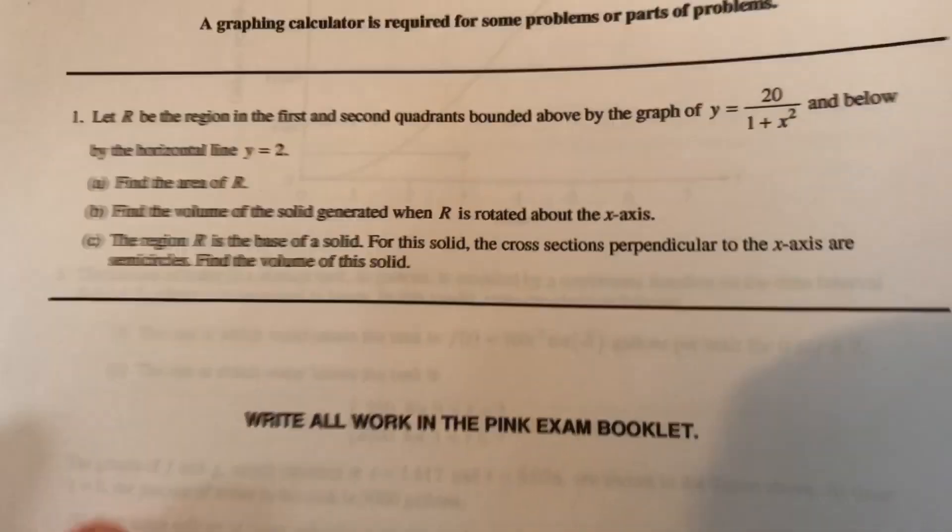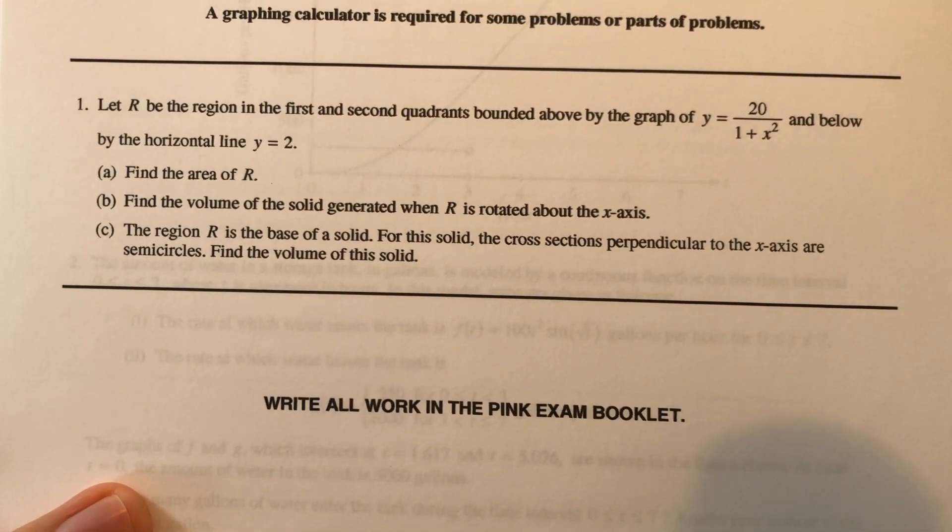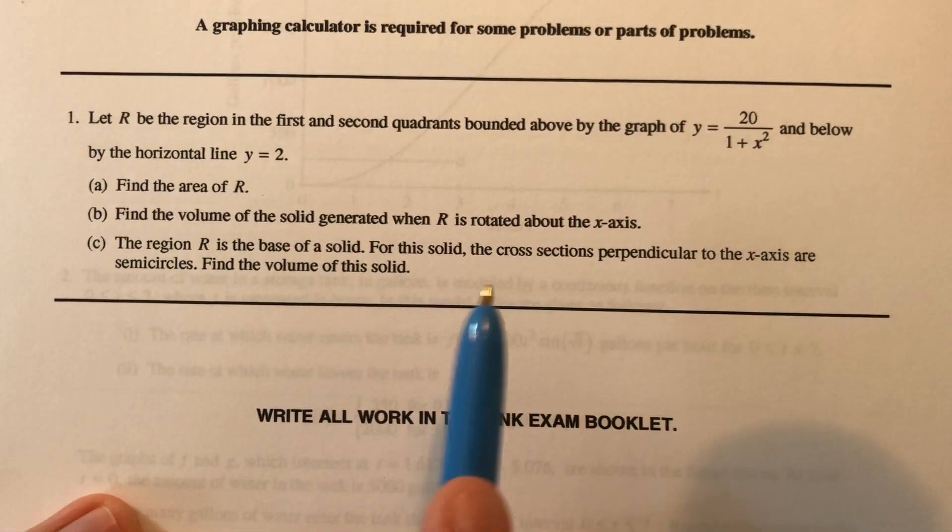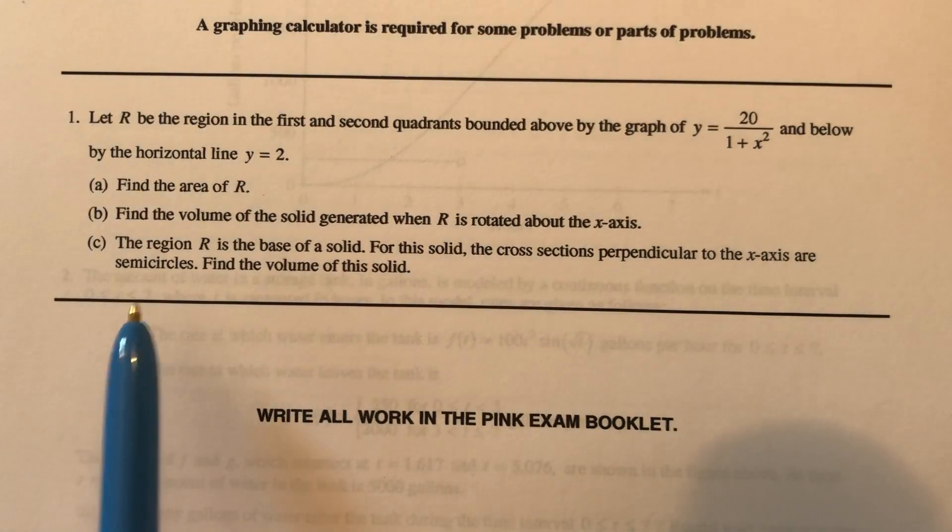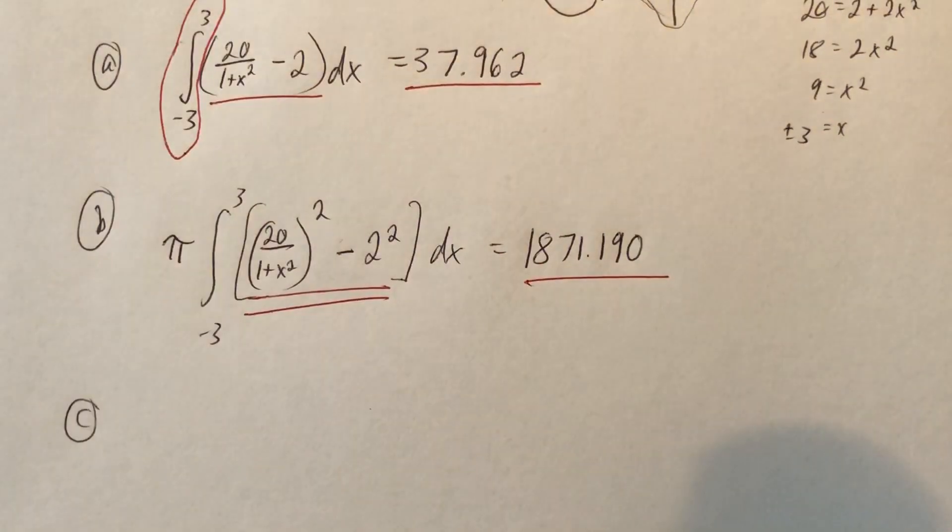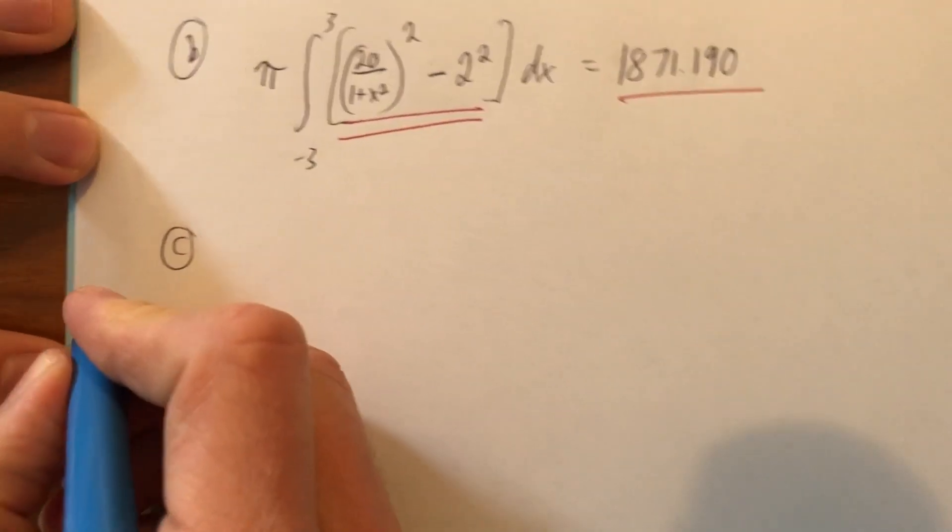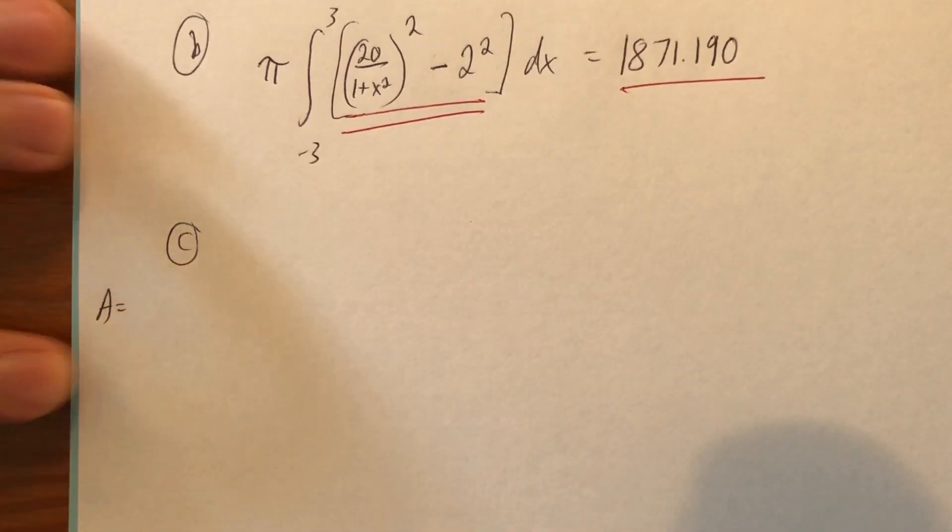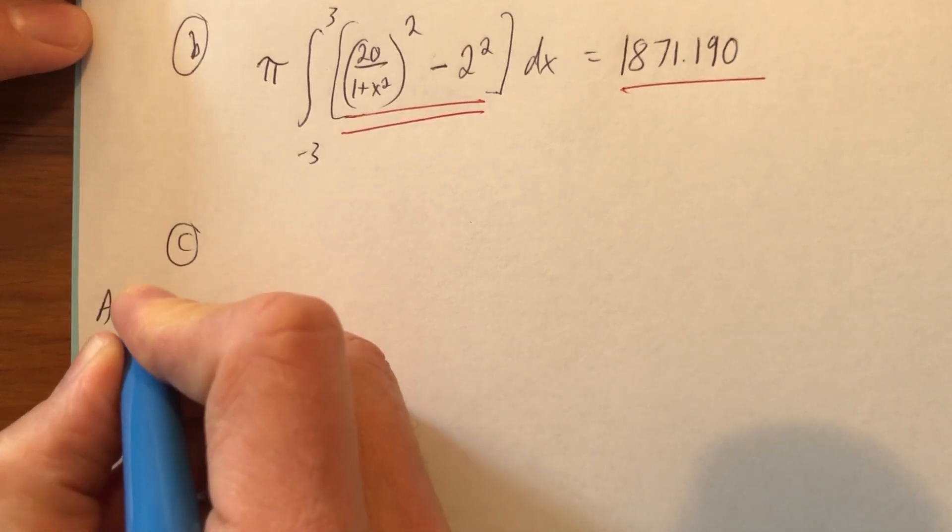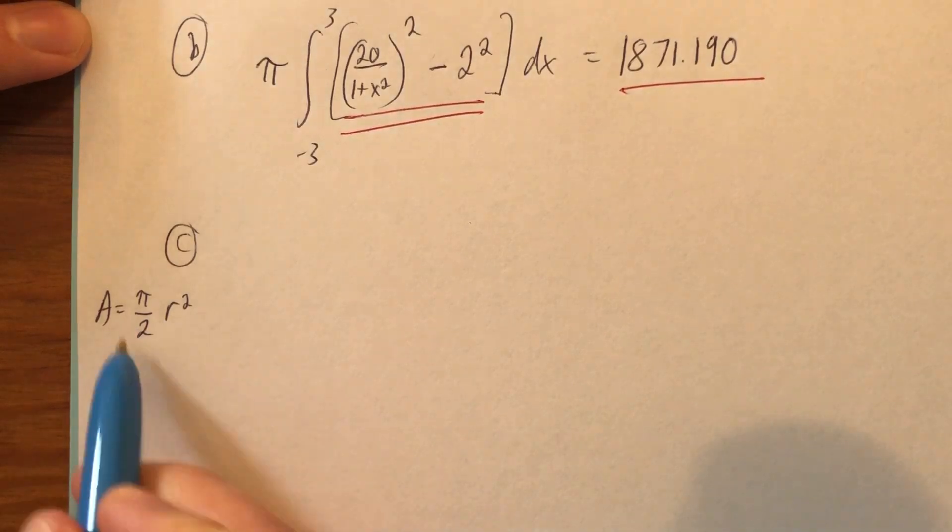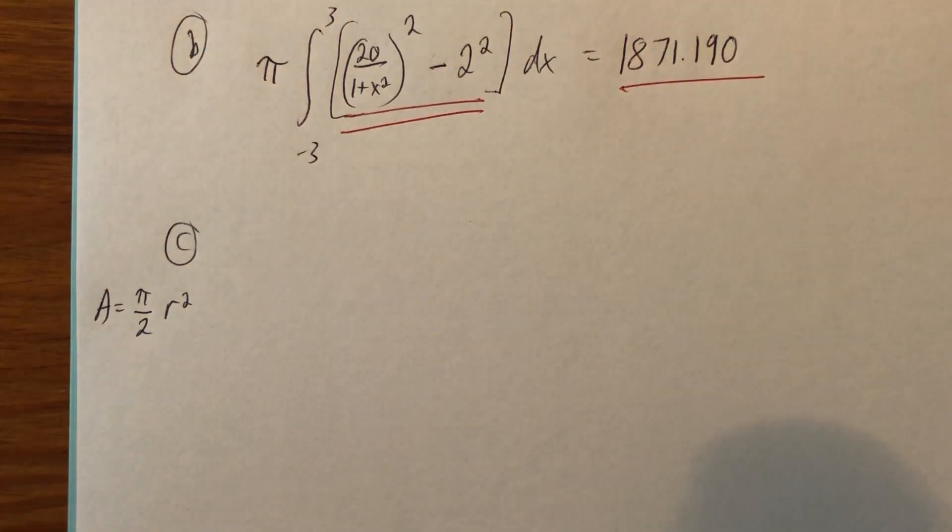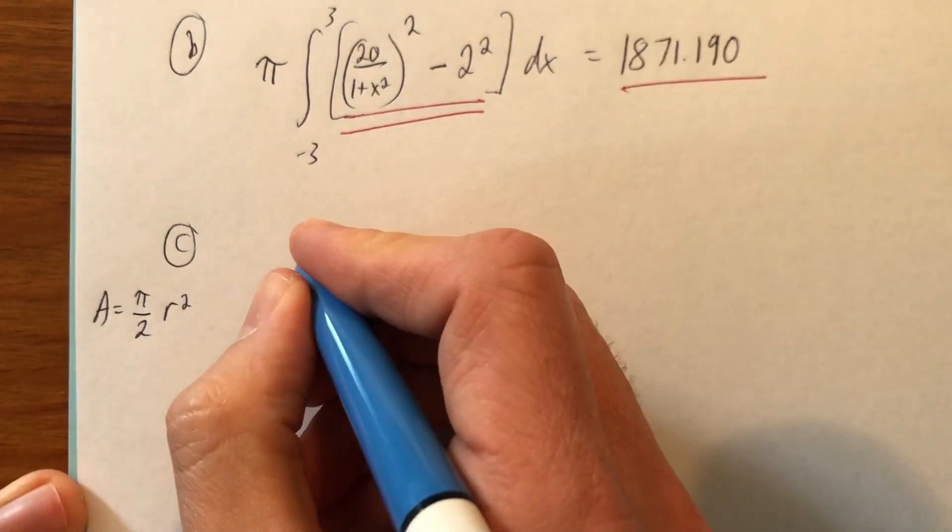The region R is the base of a solid. Okay. So we're building a building, apparently. Some sort of three-dimensional thing. For the solid, the cross-sections perpendicular to the x-axis are semicircles. Find the volume of the solid. The best way I know to explain it is to just start thinking about what the area is. So here goes. The area, and I'm just going to write it over on the side. The area of a circle, obviously, is pi r squared. Well, I don't want a whole circle. I want a half of a circle. So this is what I'm dealing with.